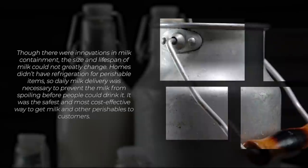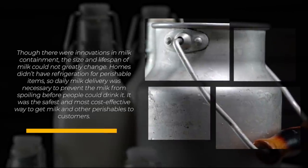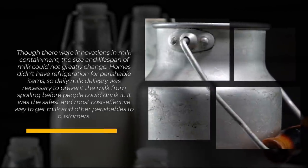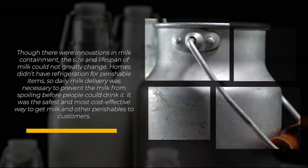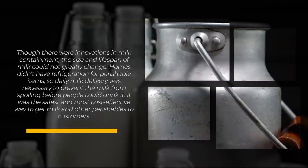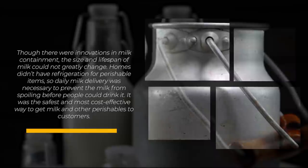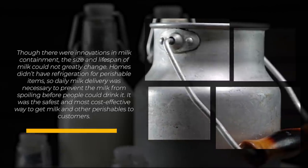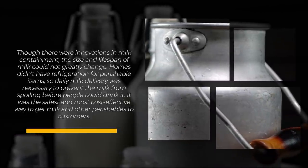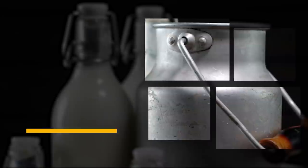Though there were innovations in milk containment, the size and lifespan of milk could not greatly change. Homes didn't have refrigeration for perishable items, so daily milk delivery was necessary to prevent the milk from spoiling before people could drink it. It was the safest and most cost-effective way to get milk and other perishables to customers.